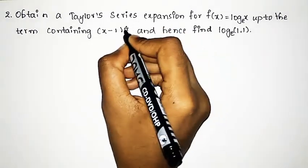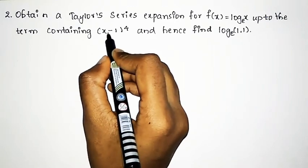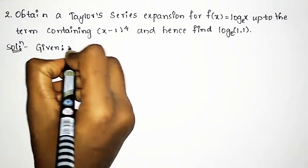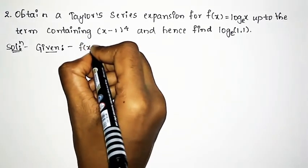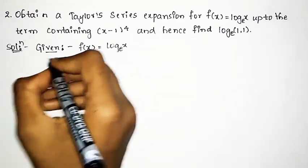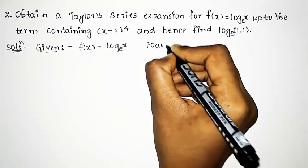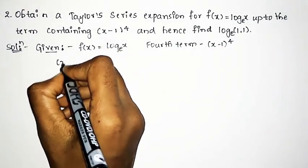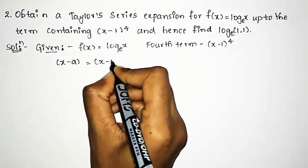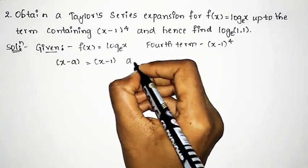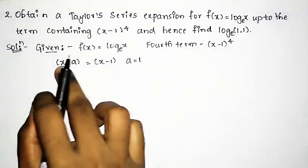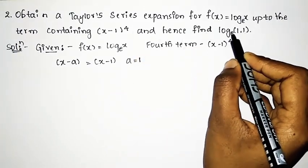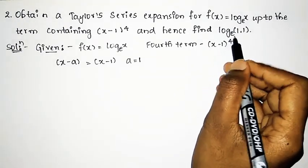We need to find the Taylor series expansion up to the 4th term, where the form is x minus a. The given function f(x) is log x to the base e, and we need to find it up to the 4th term. By observing the form (x-1)^4, we can understand that a is given as 1. Once we obtain the Taylor series expansion up to the 4th term, we then need to find log(1.1) to the base e.